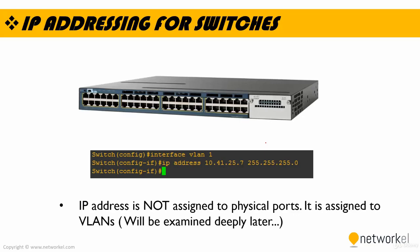And IP address is not assigned to physical ports for switches like interfaces — it's assigned to VLANs. We are going to check what VLAN is in our next sections. So just keep in mind that you cannot assign an IP address to a physical port for a Layer 2 switch. You need to assign your IP address under the VLANs. Use interface VLAN [number], then assign the IP address and subnet mask in the same style as when you assign to your router.